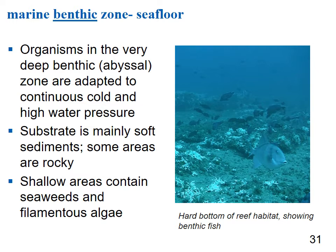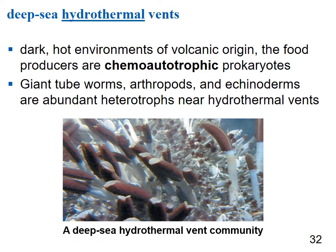The benthic zone is the sea floor. Organisms in the very deep benthic zone — the abyssal zone — are adapted to continuous cold water and high water pressure; the substrate is mainly soft sediments with some rocky areas. Shallower areas contain seaweeds and filamentous algae. Deep-sea hydrothermal vents are dark, hot environments of volcanic origin where chemoautotrophic prokaryotic organisms serve as producers instead of photoautotrophs. These systems support giant tube worms, arthropods, and echinoderms.